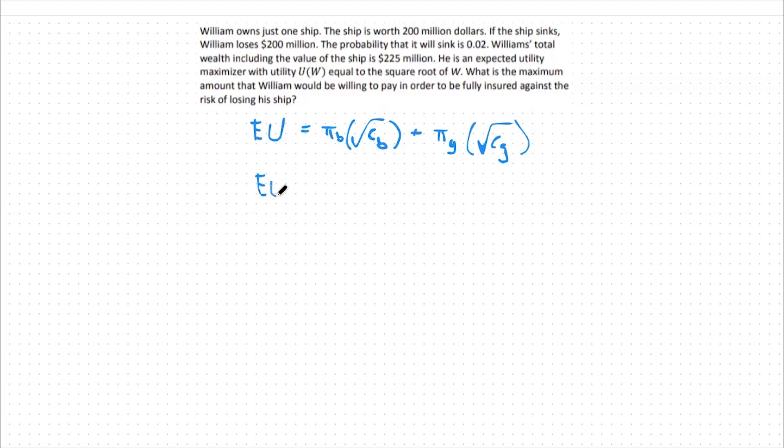Plugging in some of our numbers, we can see that the probability in the bad state would be 0.02 or a 2% chance that his ship sinks. So let's plug that in here, 0.02 times root CB plus the probability that the good state occurs, which would be the other 98% of the time. So we plug in 0.98 times the square root of consumption in the good state.